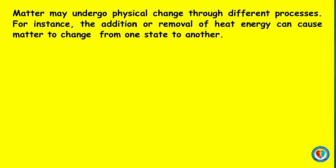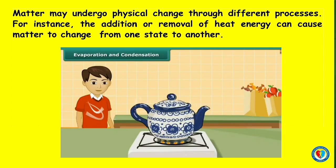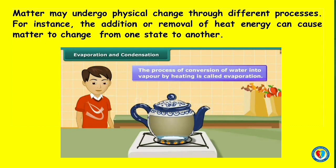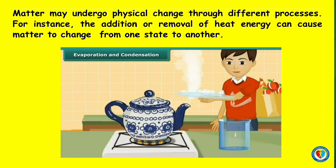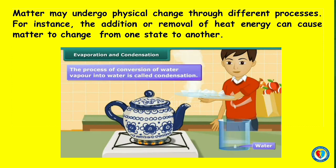Matter may undergo physical change through different processes. For instance, the addition or removal of heat energy can cause matter to change from one state to another. For example, when we boil water, you will notice that the water produces steam as the liquid molecules of the water turn to gas molecules in a process called evaporation. As they cool, the gas molecules become liquid molecules in a process called condensation.